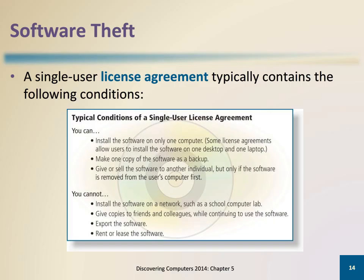A license agreement gives a user the right to use the software. The user does not own the software but only has the right to use the software under specific conditions. A single user license agreement usually allows the user to install the software on one computer, make a backup copy, and then sell the software after removing it from the computer.